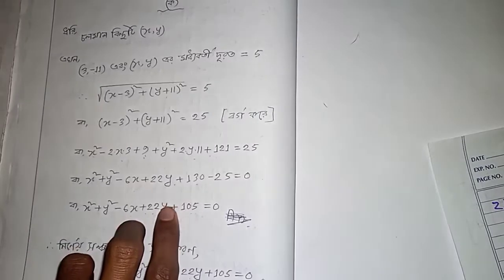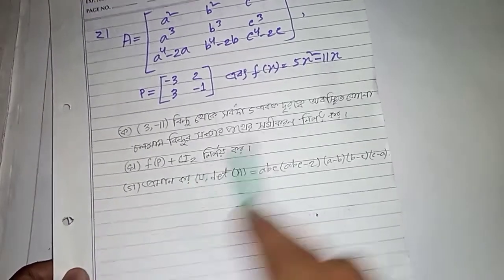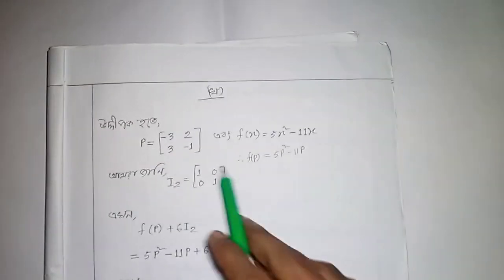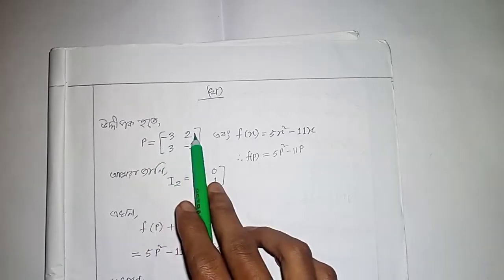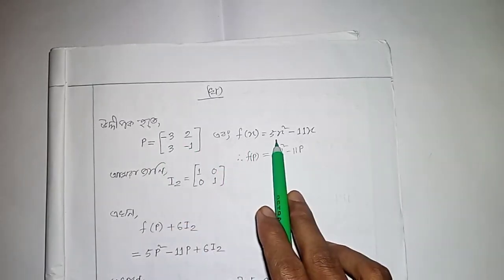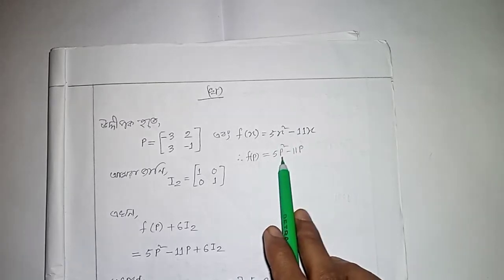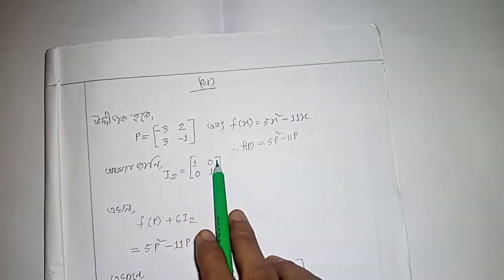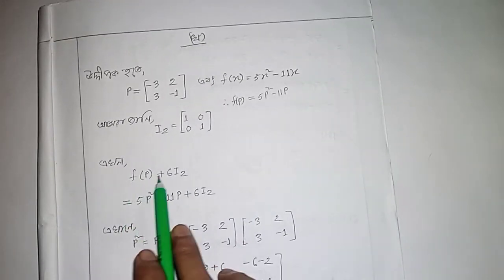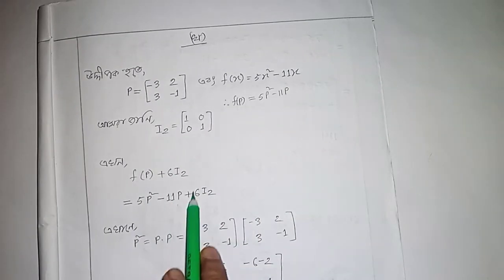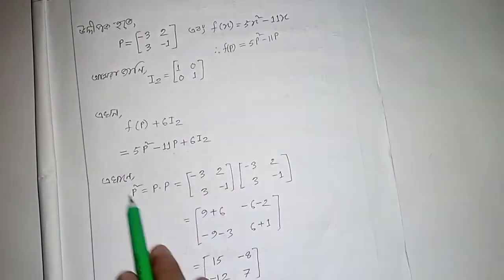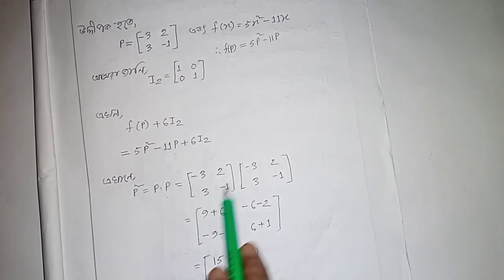f(P) plus 6I₂ equals — P equals minus 3, 3, minus 1. f(x) = 5x squared minus 11x. So f(P) = 5P squared minus 11P. I₂ equals the identity matrix. f(P) plus 6I₂ equals f(P) = 5P squared minus 11P plus 6I₂.